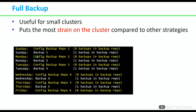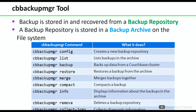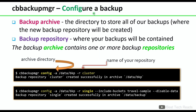cb backup mgr tool backup is stored in and recovered from a backup repository. A backup repository is stored in a backup archive on the file system. To configure a backup, we need to create a backup archive first, followed by a backup repository. A backup archive is the directory to store all backups; a repository is where your backups will be contained. The backup archive contains one or more backup repositories.